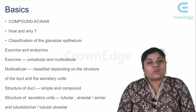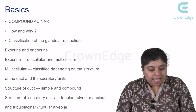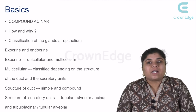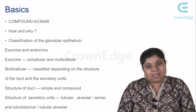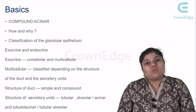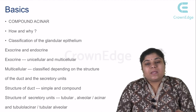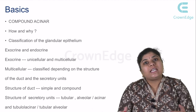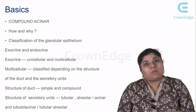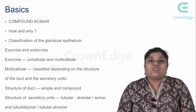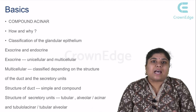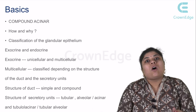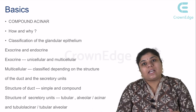To understand this question, we should go back to the basics. Glandular epithelium can be classified mainly on two characteristics. Firstly, where the secretion is directed — whether secreted to the external region or inside the body cavity or on the skin. Depending on that, it is classified as an exocrine gland or an endocrine gland.